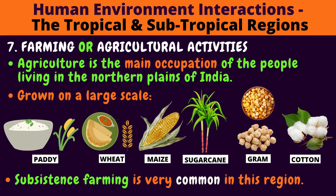Farming or Agricultural Activities: Agriculture is the main occupation of the people living in the northern plains of India. Some crops grown here on a large scale are: Paddy (rice), Wheat — used to make chapati or roti, Maize (corn), Sugarcane — the source of sugar, Gram — which includes chole and dal (chickpea), and Cotton — used to make clothes. Subsistence farming is very common in this region.